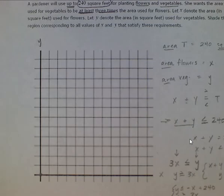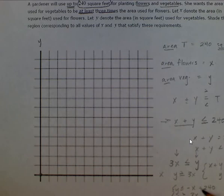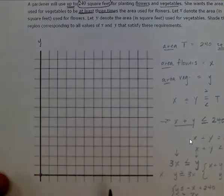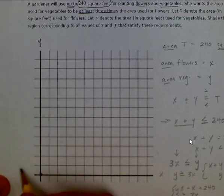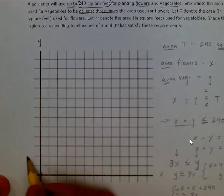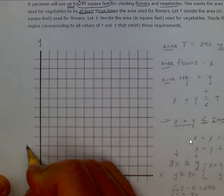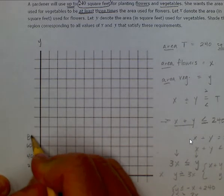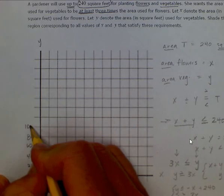Now we can graph this. The first inequality has a large y-intercept of 240. We set up our graph with each grid point labeled as 20 to fit everything on the coordinate plane. This is the y-axis, this is the x-axis, and we label each gridline as increments of 20.